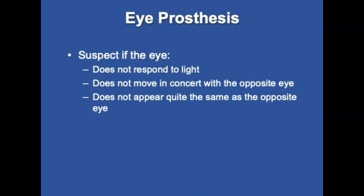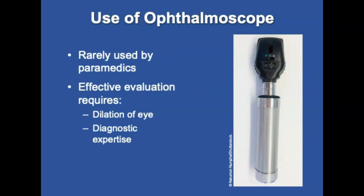Regarding eye prosthetics, suspect a patient has an eye prosthesis if the eye does not respond to light, does not move in concert with the other eye, does not appear the same as the opposite eye, or the patient says they have one. An ophthalmoscope may be used by physicians to evaluate the eye — it consists of a concave mirror with a battery-powered light, a rotating lens section, and adjustable depth and magnification. Effective evaluation requires pupil dilation and significant diagnostic experience; refer to skill drill 19-1 for steps.